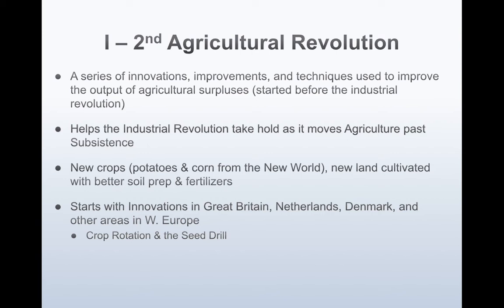We started the improvements before the industrial revolution because the agricultural revolution actually allowed for the industrial revolution to occur. That's a very important thing to understand — the agricultural revolution allowed the industrial revolution to start because we moved past subsistence.